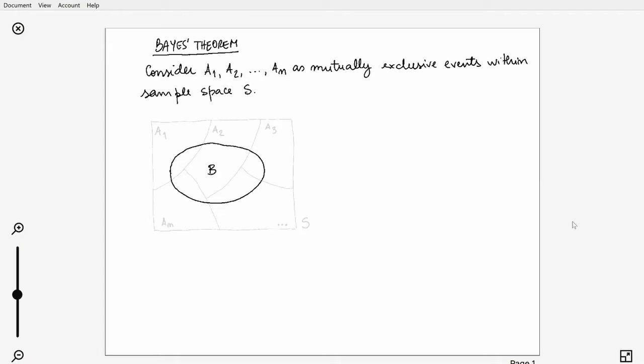Regarding Bayes' theorem, consider a sample space as represented in the picture. We have a set of A events which are all mutually exclusive, and then there is a B event defined within the sample space as well that overlaps all the A events.